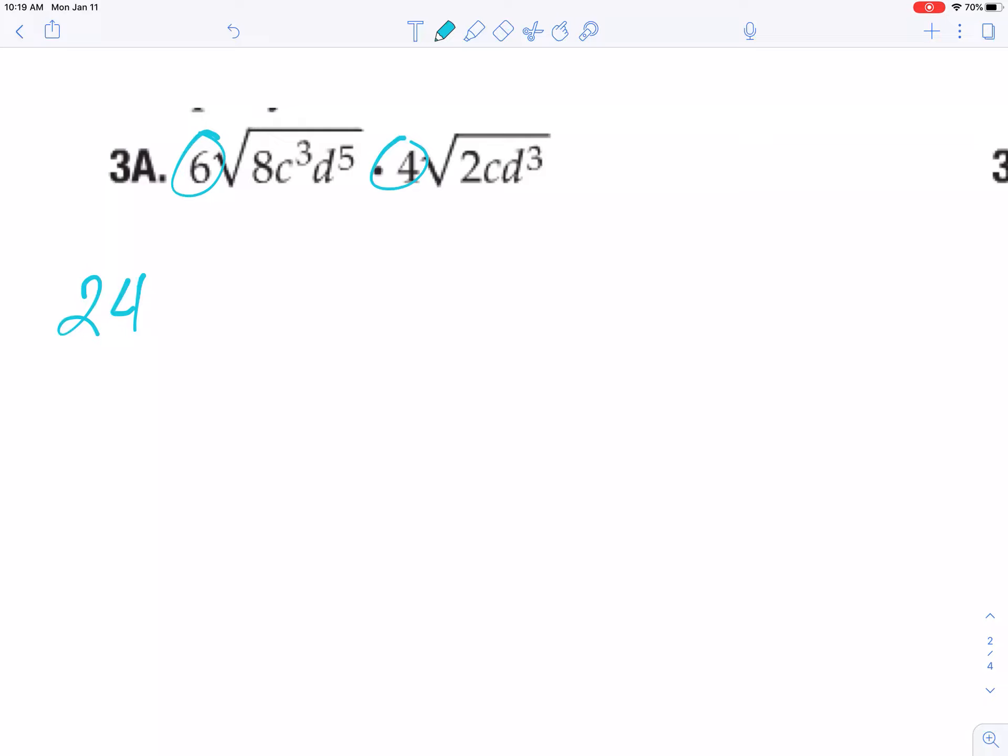Then you can go ahead and do the stuff that's underneath the radical sign. So all of this times all of that. So radical sign, 8 times 2 is 16. That would be c to the 4th and d to the 8th.